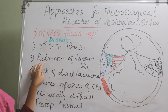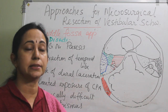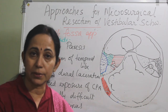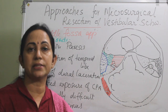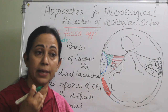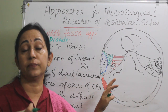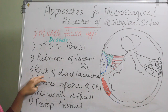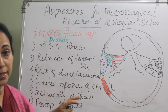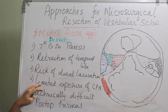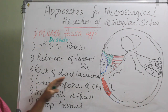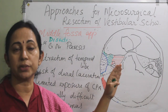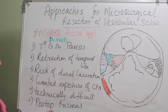The second disadvantage is that retraction of the temporal lobe is needed in this approach, which can lead to troublesome motor deficit, especially if the dominant side is affected. There is also a risk of dural laceration, especially in elderly patients. Additionally, there is very limited exposure of the posterior fossa and the CP angle.